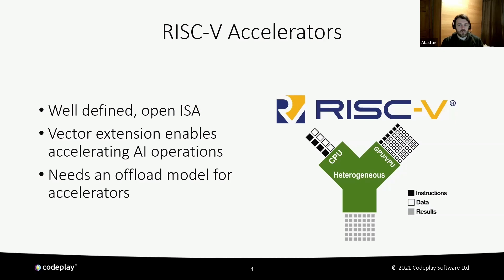The vector extension alone does not make an accelerator. We also need the offload concept, where the host CPU offloads work to multiple RISC-V cores that are part of the accelerator. In this diagram, you can see how the CPU is used as part of a heterogeneous architecture to offload the parallel execution of instructions and data to the accelerator processor. There are already existing programming models for these architectures, such as SYCL, OpenCL, and Vulkan.